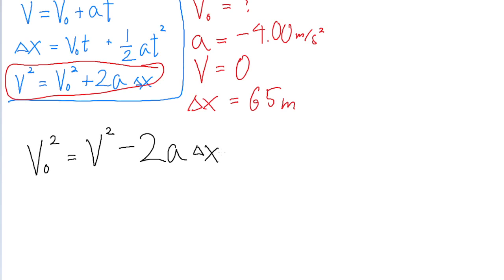Since we have V0 squared on one side, we'll have to take the square root of both sides of the equation. So we find that V0 equals the square root of V squared minus 2a delta x.